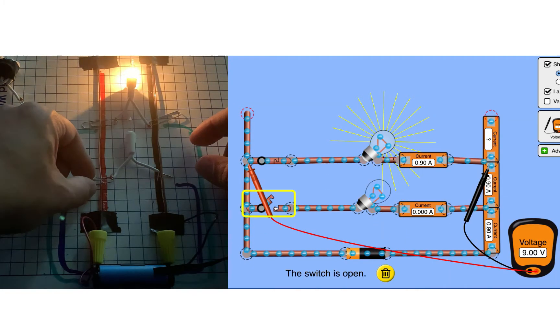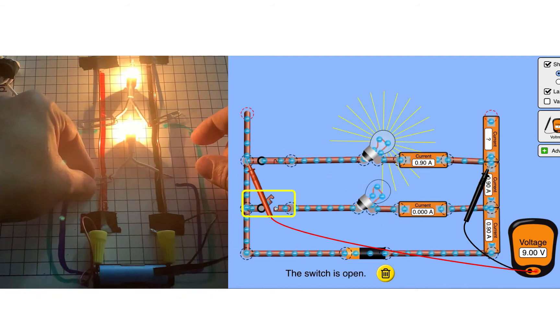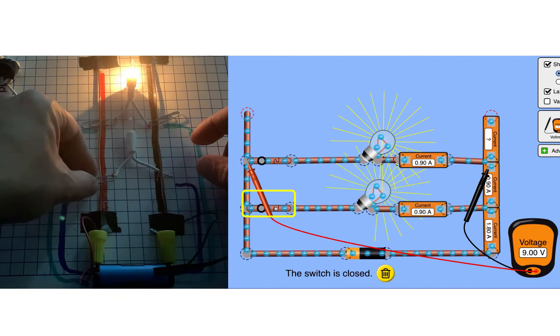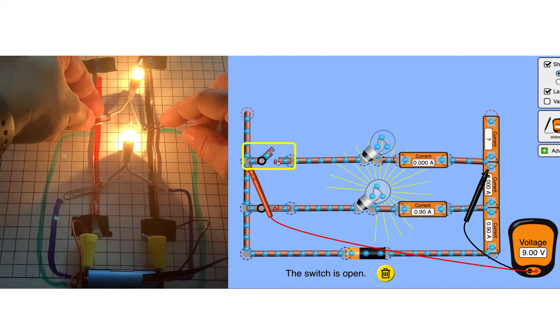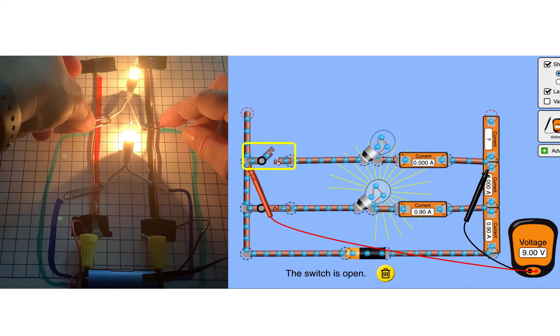I'm going to turn both lights on and off — you may want to rewatch this part a few times so you can notice what's going on. Is the other bulb affected? Are any of the values in the simulation changing?